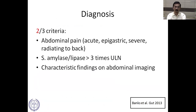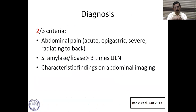The diagnosis of acute pancreatitis is based on the fulfillment of two out of three criteria: abdominal pain which is acute, epigastric, severe, and radiating to the back; pancreatic enzymes being at least three times the upper limit of normal; and characteristic findings on abdominal imaging.